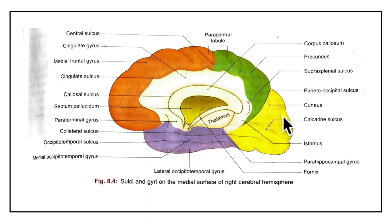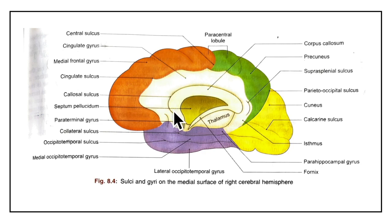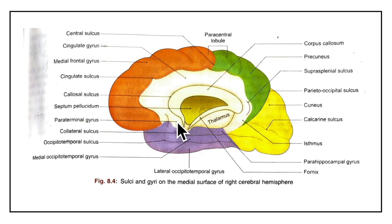Now let's move on to the sulci and gyri of the medial surface. This diagram shows the medial surface of the right cerebral hemisphere. The sulci include: the cingulate sulcus, the callosal sulcus, the suprasplenial sulcus, the calcarine sulcus, the parieto-occipital sulcus, and the anterior and posterior para-olfactory sulci. The gyri include: the paraterminal gyrus, the para-olfactory gyrus, the cingulate gyrus, medial frontal gyrus, paracentral lobule, precuneus, cuneus and the isthmus.